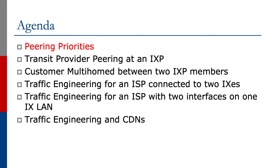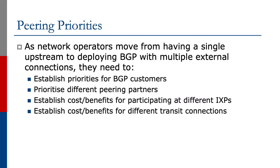The first one we'll have a look at is what's known as peering priorities. When we covered the multi-homing slides we talked about setting local preferences for different types of customers. As network operators move from having a single upstream to deploying BGP with multiple external connections, they need to have a more formal process for how these priorities are set up.